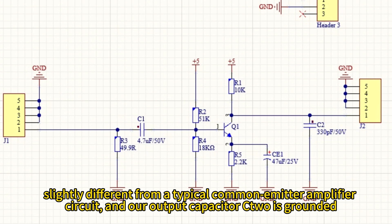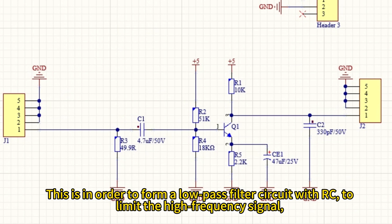Slightly different from a typical common emitter amplifier circuit, our output capacitor is grounded. This is in order to form a low-pass filter circuit with RC to limit the high-frequency signal.